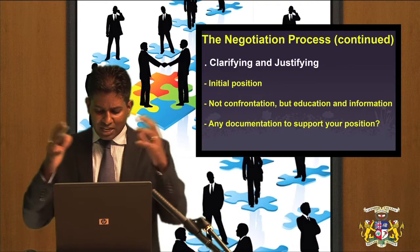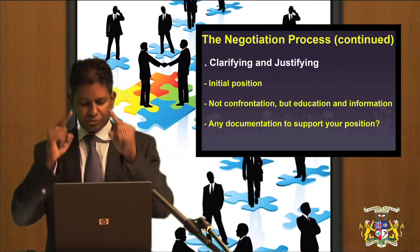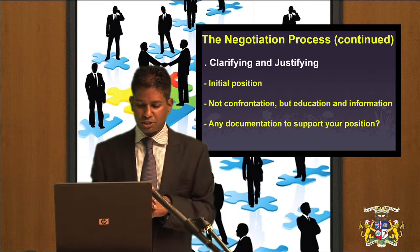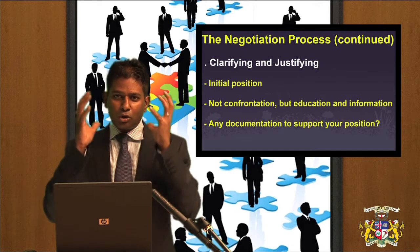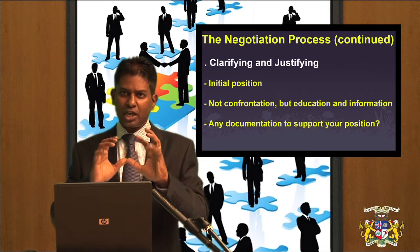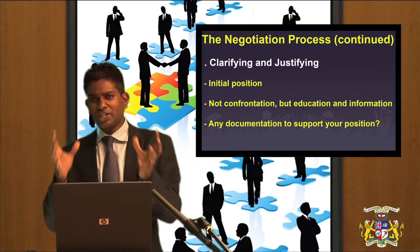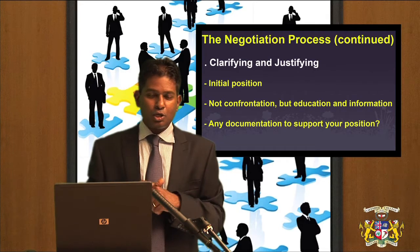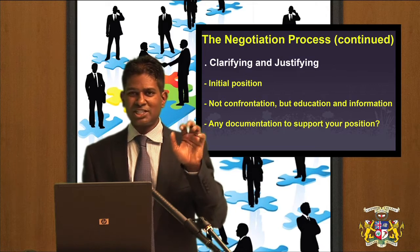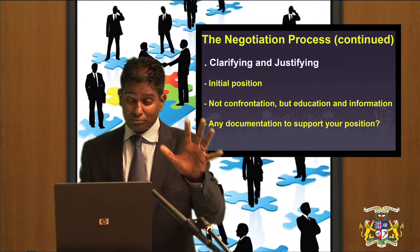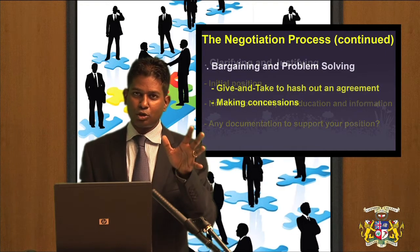The third stage in the negotiation process is clarifying and justifying. After exchanging the initial positions, you and the other party will have to explain, clarify, and justify original demands. Remember, negotiation is not the place to confront the other party — your objective should be education and information. Do everything possible to educate the other party. Provide as much relevant information as possible. Should you have documentation to support your position and viewpoints, make sure to have those documents — facts, figures, and statistics — anything authentic will help you buttress your arguments with force, logic, and reason.